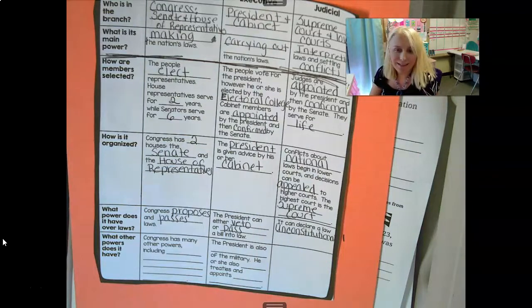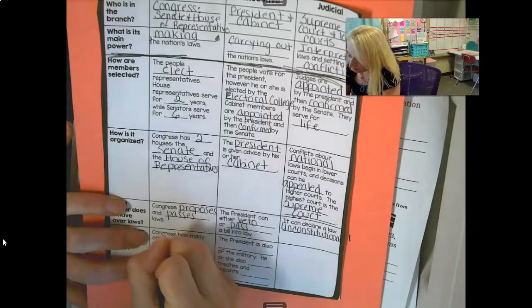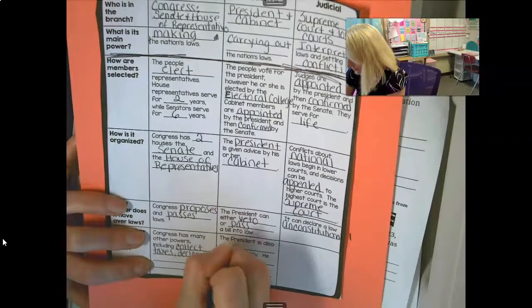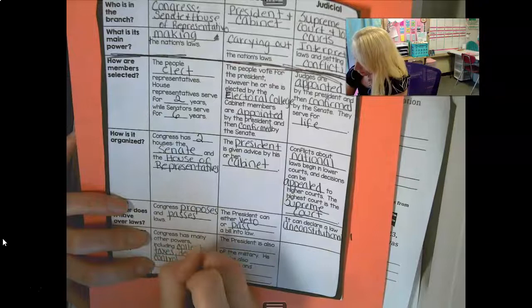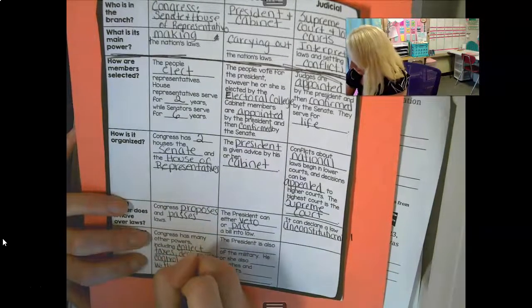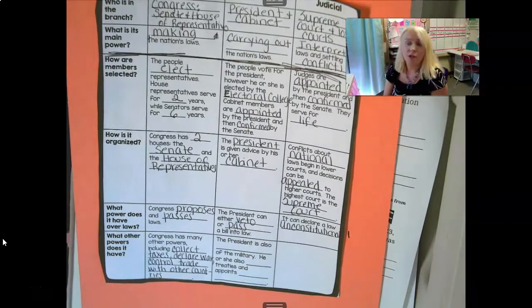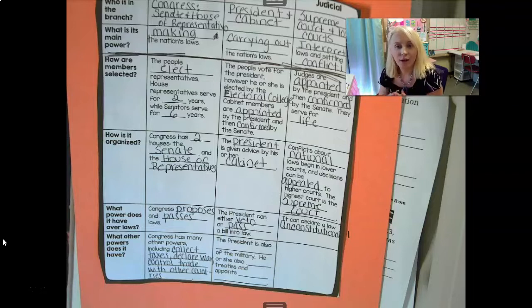What other powers does Congress have? Congress has many other powers, including collecting taxes, the power to declare war, and the power to control trade with other countries. Trade is important — some places have things we don't, and we need access to those items, so we trade what we have for what they have. They want to trade with us because we have things they don't. Everybody benefits, hopefully.